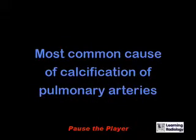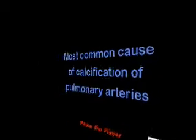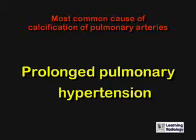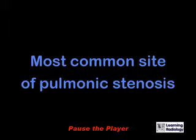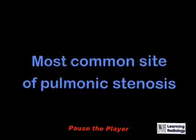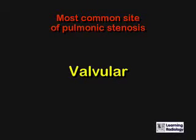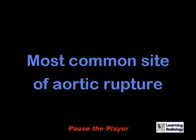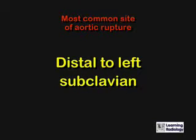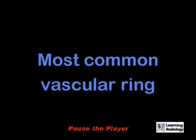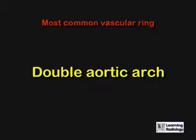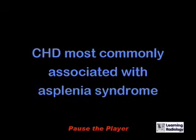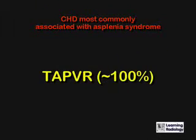What is the most common cause of calcification of the pulmonary arteries? What is the most common cause of pulmonary hypertension? What is the most common cause of aortic rupture, distal to the left subclavian? What is the most common vascular ring? A double aortic arch. What congenital heart disease most commonly is associated with Asplenia syndrome? Total anomalous pulmonary venous return.